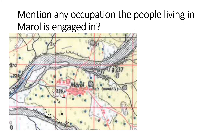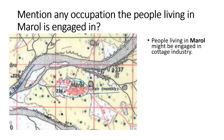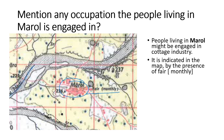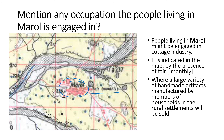Mention any occupation the people living in Marul are engaged in. Here is Marul — we can see a monthly fair is there. You can write about agriculture as well, since yellow wash and a number of perennial wells are present. You can also write that people might be engaged in cottage industry. This is indicated on the map by the presence of a fair, which is a monthly fair where a large variety of handmade artifacts manufactured by members of the rural household are sold.